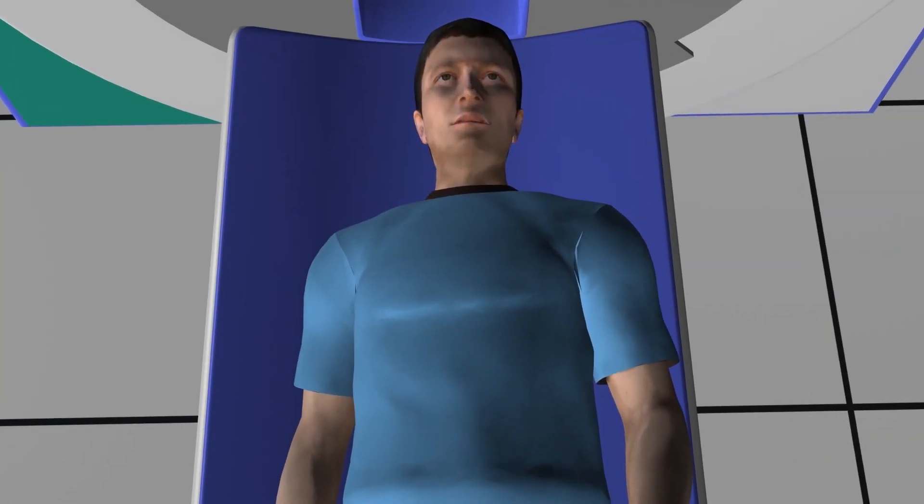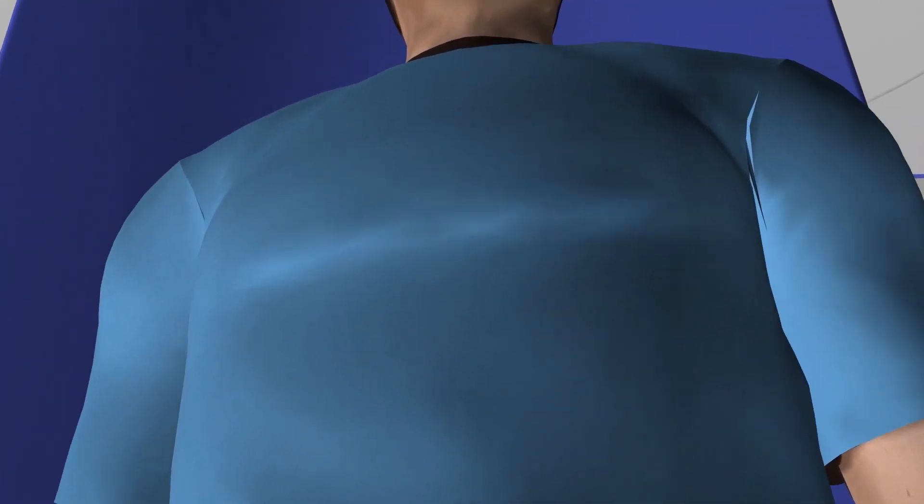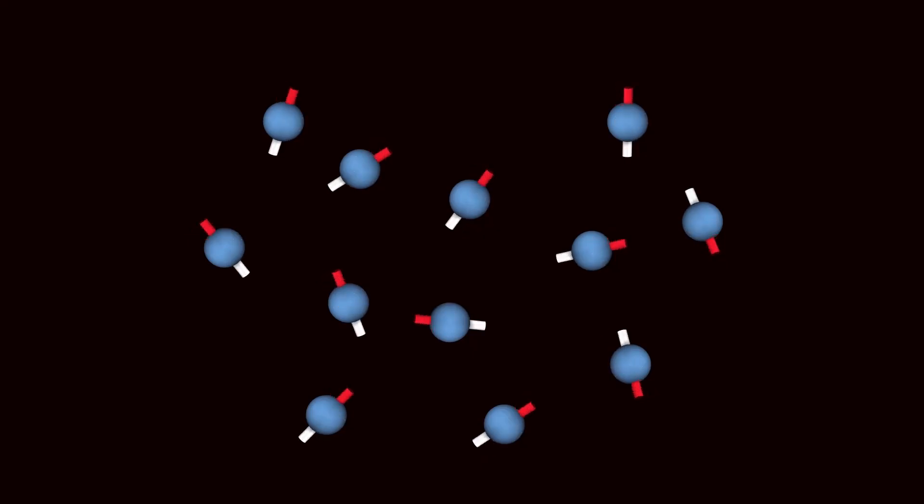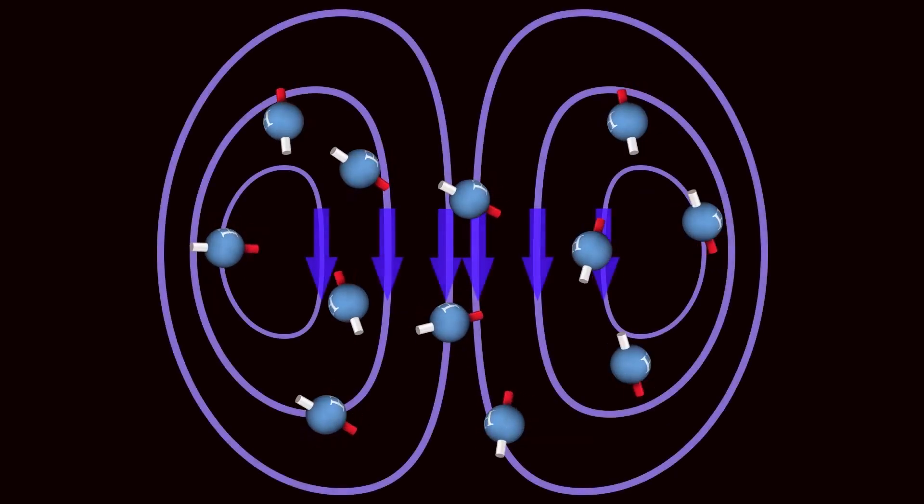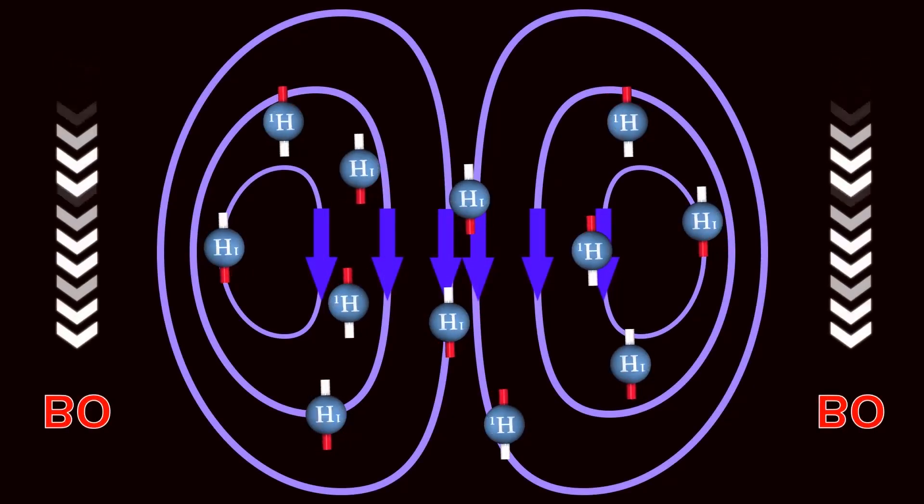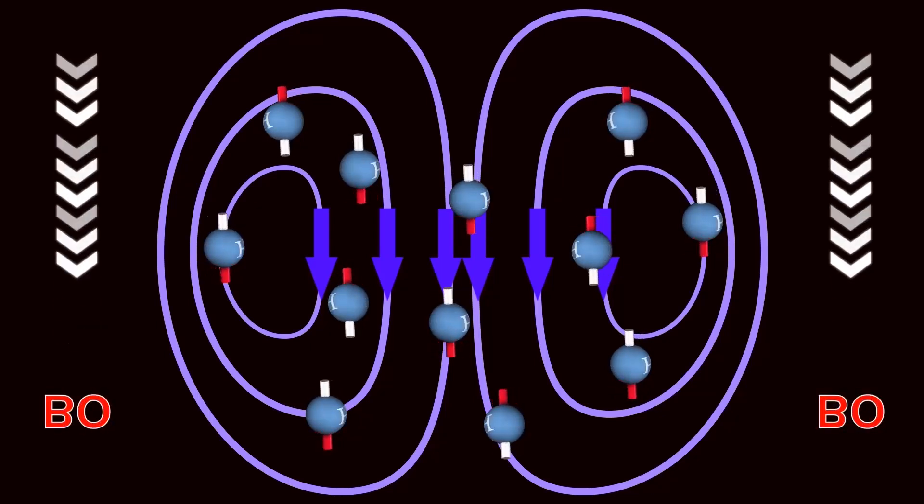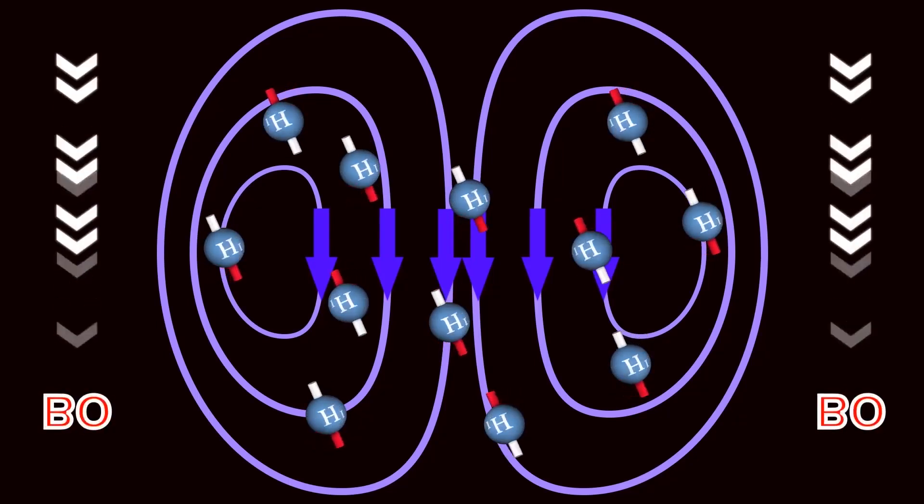At any moment in time, all hydrogen protons in our bodies are all in random positions and spinning on their axes. When the human body is placed inside an MRI scanner, a strong and uniform magnetic field B0 is applied. This strong magnetic field aligns all the protons in the human body.